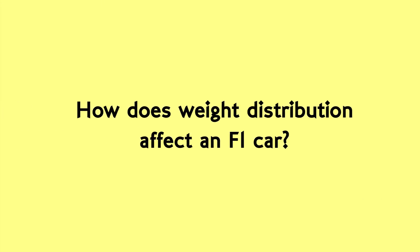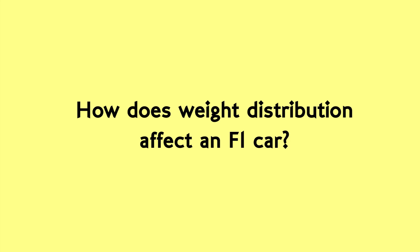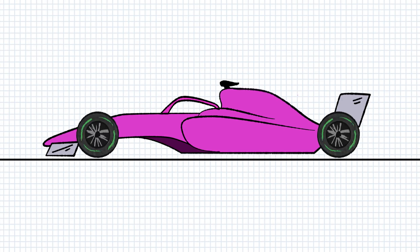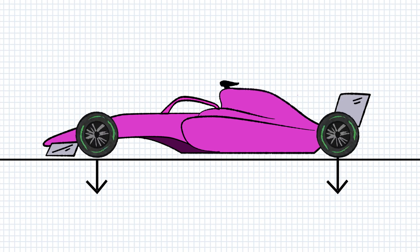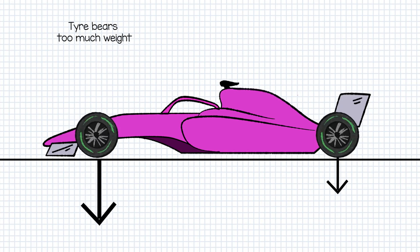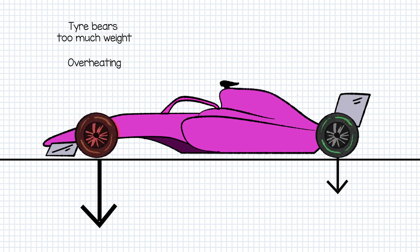So how does weight distribution affect an F1 car? One is how much you want to load up the tyres. The tyres are the only points of the car that touch the ground so ultimately all the weight of the car is borne through the tyres. If you force a tyre to bear too much weight, it can start to overheat more quickly as it's used which can lead to degradation and loss of grip.